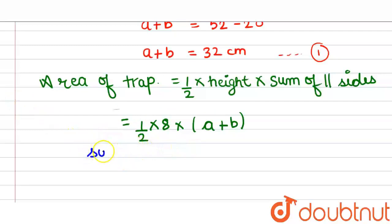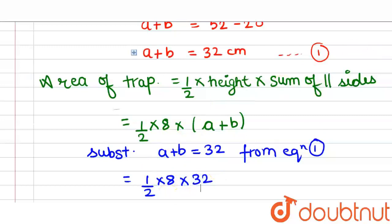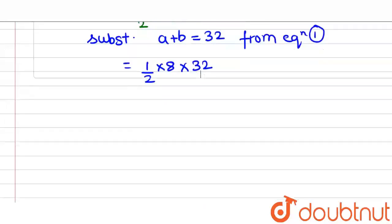Now we know the value of A plus B. So we would substitute A plus B is equal to 32, and it is from equation number 1. So it is half into 8 into A plus B is my 32. So let us solve this. So this 2 gets cancelled with this 8, so it becomes 4. So it is 4 into 32, which is equal to 128 cm square.